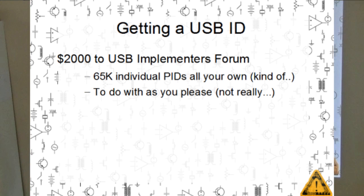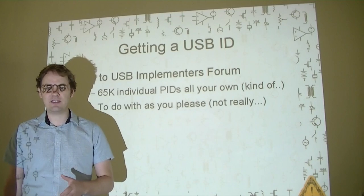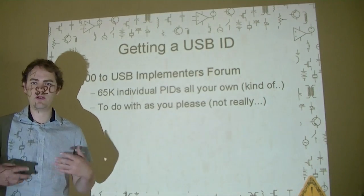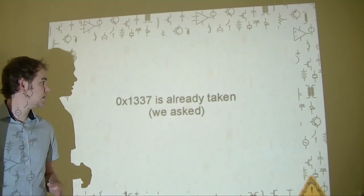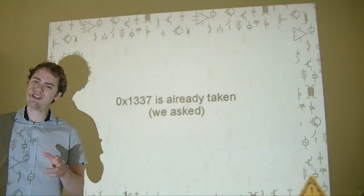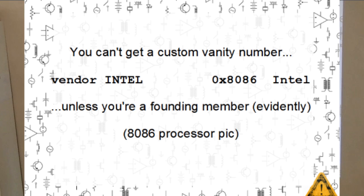To get a USB ID you have to be a legitimate corporation and you have to shell out $2,000 to the USB Implementers Forum. That gets you a unique vendor ID that has 65,000 individual product IDs attached to it. You can use these in your firmware, in your projects, in your hardware. 1337 is already taken — we checked. And you can't get a custom vanity ID unless you're Intel, evidently.